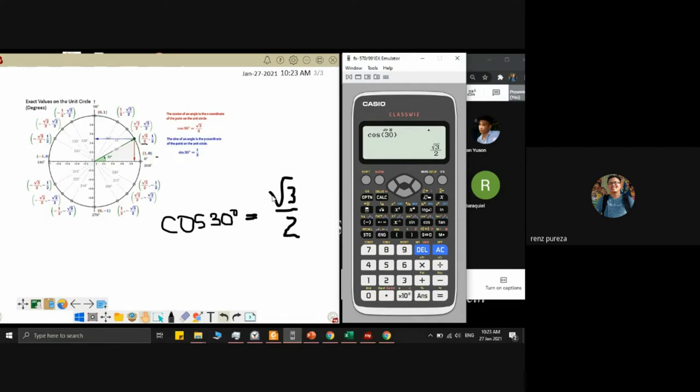The simple answer is you can use the calculator for everything. However, the problem with only using calculator is we don't understand why it became square root of 3 over 2. Where does it come from? Where did it originate?